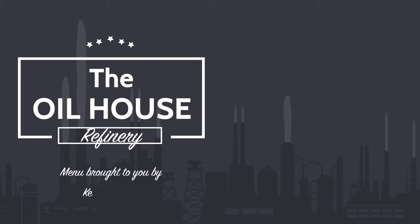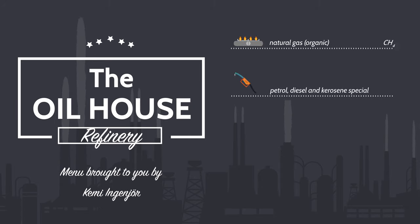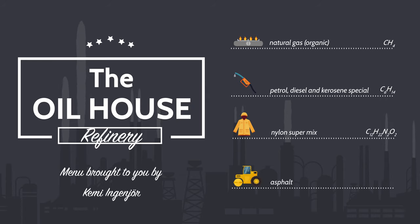Looking downstream, chemical engineers work on refining crude oil to produce things like gas to heat our homes, petrol, diesel and kerosene for transport, nylon for waterproofs, asphalt for laying roads and so much more.